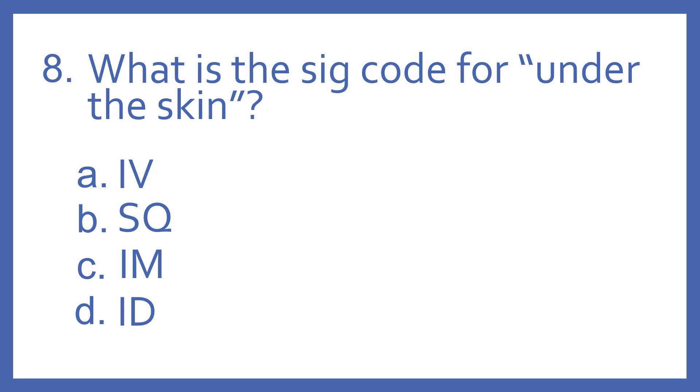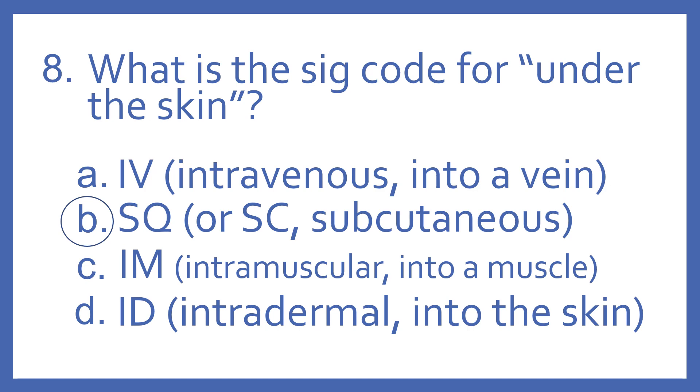Number eight, what is the SIG code for under the skin? A, IV, B, SQ, C, IM, or D, ID? And the answer is B, SQ, or SC. That's the SIG code for under the skin, which stands for subcutaneous, which means under the skin. IV means intravenous, which means into a vein. IM is intramuscular, which means into a muscle. And ID is intradermal, which means into the skin.